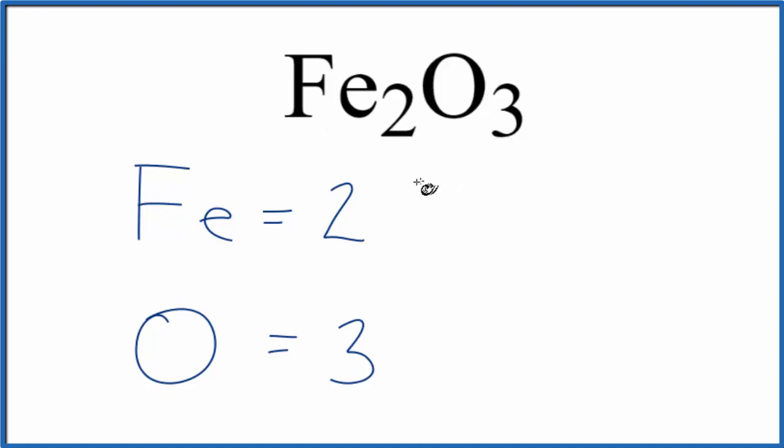Sometimes you're asked to figure out the number of, for example, oxygen atoms in 1 mole of Fe2O3. To figure that out, you just take the number of atoms and multiply that by Avogadro's number.